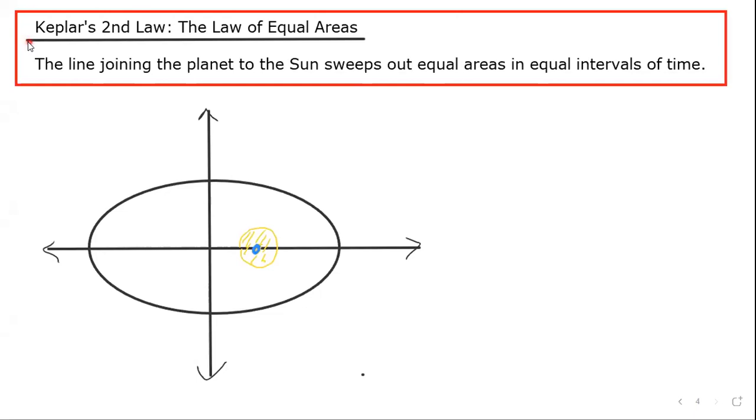We'll now be looking at Kepler's second law, which also has a name. So after Kepler's first law, the law of ellipses, we now have the law of equal areas.